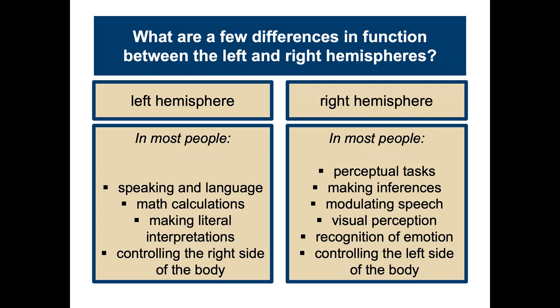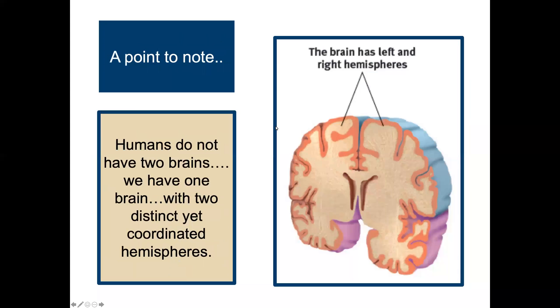What are the differences between the left and right hemisphere? We're not right-brained or left-brained — our two hemispheres work together. But in most people, the left hemisphere controls speaking and language, math calculations, making literal interpretations, and controlling the right side of the body. The right hemisphere in most people is more responsible for perceptual tasks, making inferences, modulating speech, visual perception, recognition of emotion, and controlling the left side of the body.